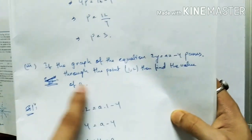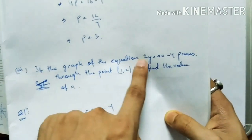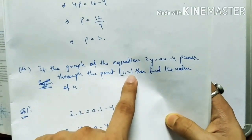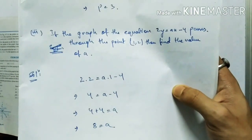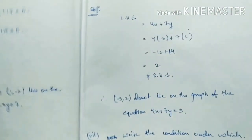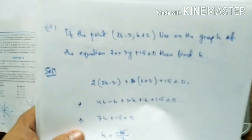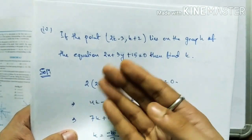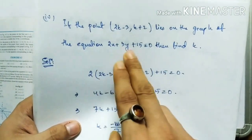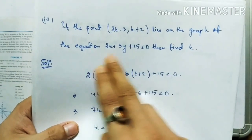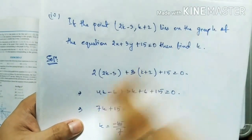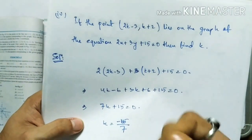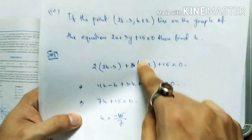If the graph of an equation passes through a given point, that point is a solution of the equation. Substitute the x and y values into the equation to find the unknown. Similarly, for Question 4 sub-questions — if a point lies on the graph, that means the point lies on the straight line represented by the equation. Substitute x and y values to find K.